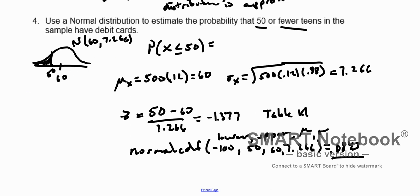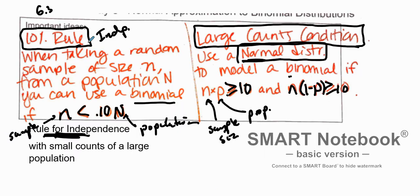To summarize: to determine independence we use the 10% rule, and to determine whether a binomial distribution can be treated as normally distributed we use the large counts condition. Hopefully this helps you out.